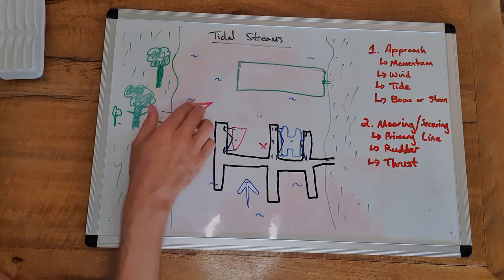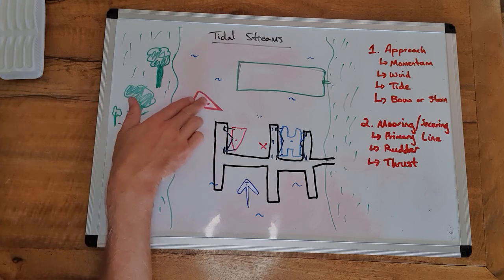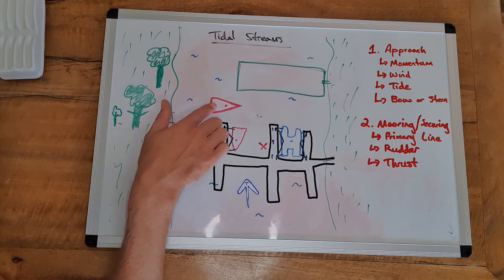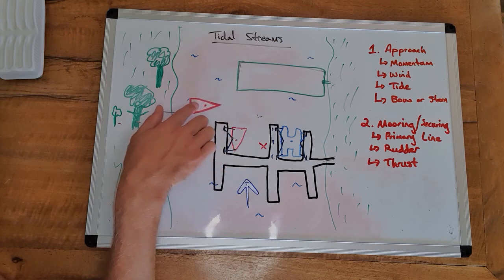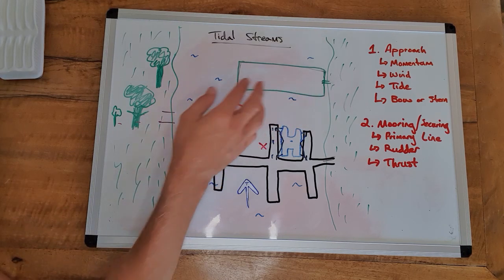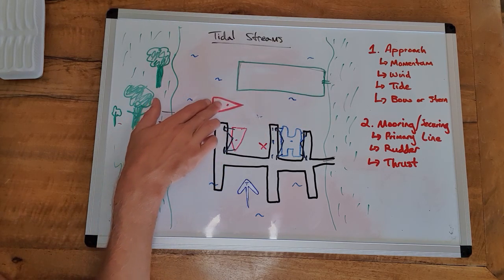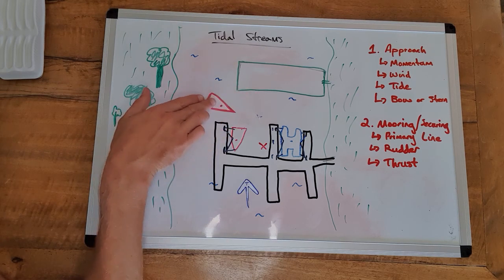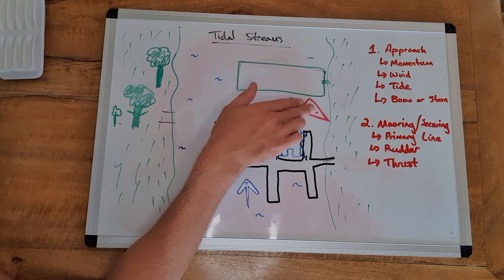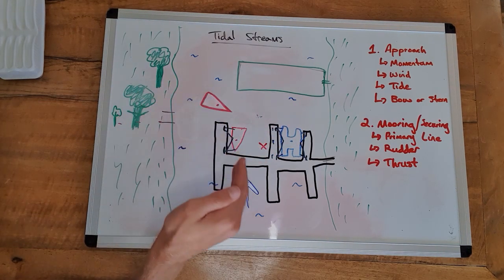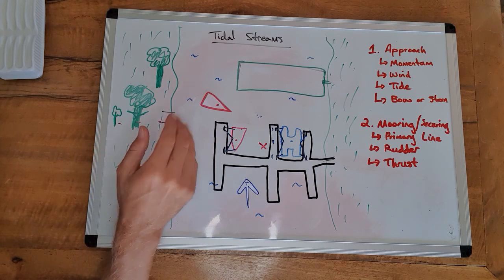So the first thing is, if we were to go bow in, as we came along this way towards our berth, if we just steered the boat straight on at a right angle straight directly at the land, we are going to end up going like this. So we're going to crab our way in. We have to turn the boat like that to take us across the river just to offset this tide, and that angle will change depending on how much tide there is.